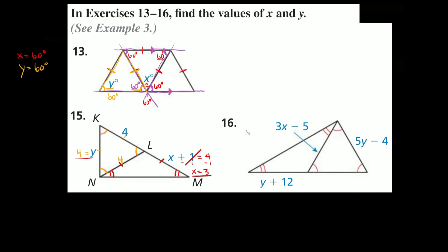Let's try number 16. The equilateral triangle sticks out first — all angles are the same, so all sides must be the same. That means 5y minus 4 is equal to 3x minus 5. Then there's this isosceles triangle — it tells us these two angles are the same, so the two sides are the same. That means y plus 12 must equal 3x minus 5. So all three expressions — y plus 12, 5y minus 4, and 3x minus 5 — are equal to each other.